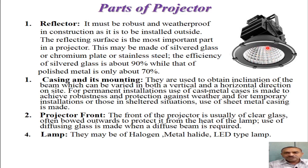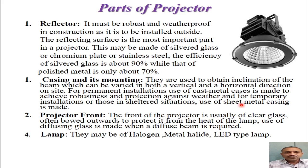Another important part is the casing and its mounting. The inclination of the beam angle can be adjusted in both vertical and horizontal directions using the casing and mounting. Cast metal cases are used for a robust structure and weather protection, while sheet metal casing can be used for temporary installations such as in outdoor shelter situations.